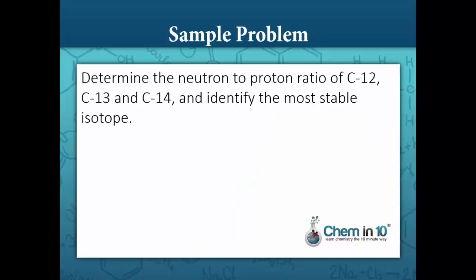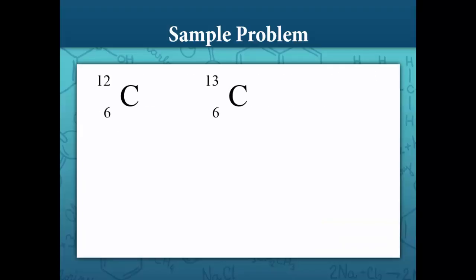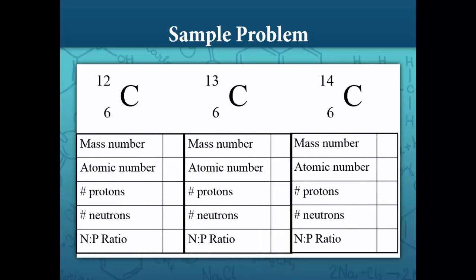Let's look at a sample problem. Determine the neutron-to-proton ratio of carbon-12, carbon-13, and carbon-14 and identify the most stable isotope. To determine the neutron-to-proton ratio of these three isotopes, we first need to figure out how many protons and neutrons each contains. The mass number of carbon-12 is 12, and its atomic number is 6. This means it has 6 protons and 6 neutrons, because the number of neutrons is determined by subtracting the atomic number from the mass number. The neutron-to-proton ratio is 6 divided by 6, which is 1 to 1.